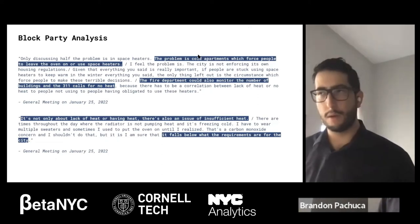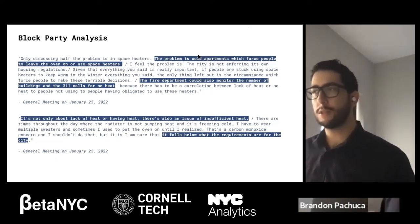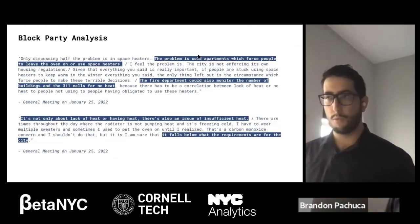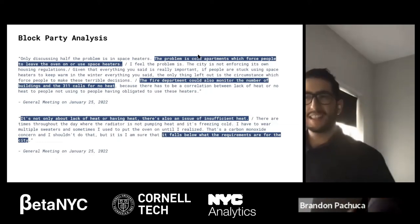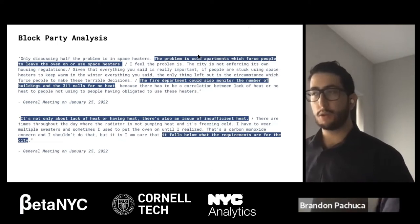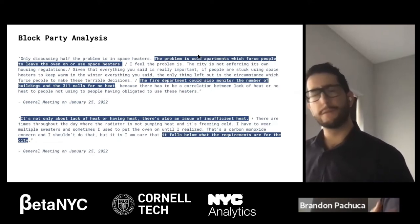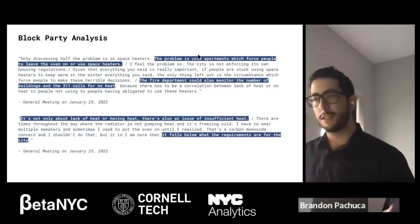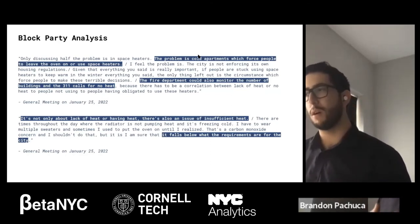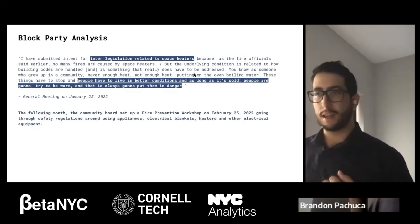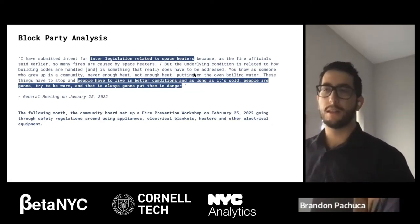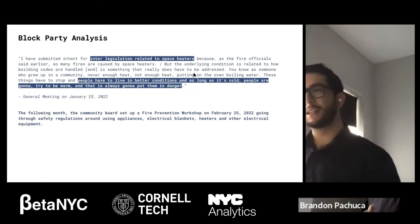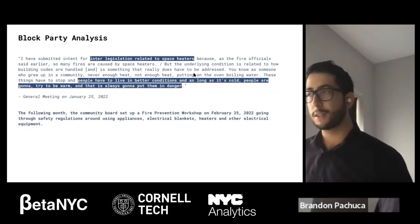Using the archive mode on the BlockParty website, we searched for instances where issues around heat and hot water came up. There were key points made in the general community board meeting on January 25th after the recent tragic fire at a Bronx high-rise apartment. They mentioned the city is not enforcing its own housing regulations, where the indoor temperature must be 62 degrees at night and 68 degrees during the day. The use of space heaters, ovens, and other appliances are not safe if used improperly. In addition to no heat, the city must respond to insufficient heat as well, because residents will take potentially unsafe measures. A community board member discussed how legislation can help ensure comfortable temperatures in all apartments and prevent future fires — quote: 'People have to live in a better condition. And as long as it's cold, people are going to try to be warm, and that is always going to put them in danger.'